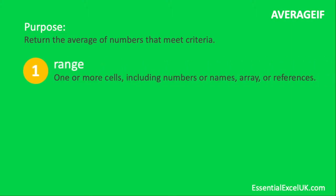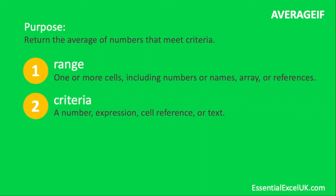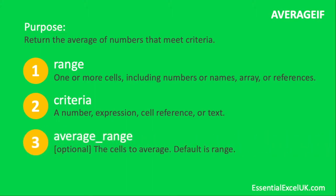What makes up the AVERAGEIF function? The first part is the range — one or more cells including numbers, names, arrays, or references. The second part is the criteria — a number, expression, cell reference, or text that we wish to use to formulate our average. The third and final piece is the average range, which is optional and is the range containing the cells we wish to be averaged. If we do not put in an average range, the default is to just look at the values in the first part — the range.